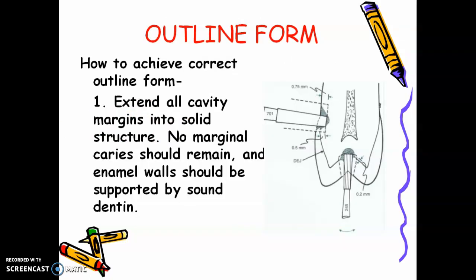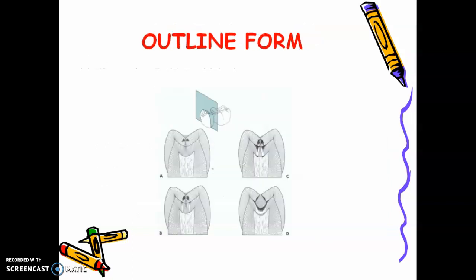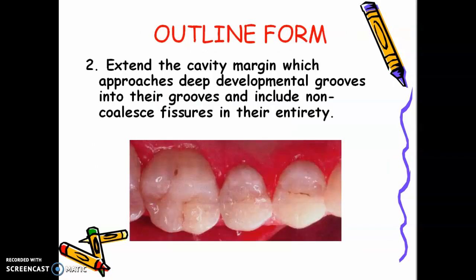So how do you achieve correct outline form? First, extend all cavity margins into solid structure — no marginal caries should remain. An enamel wall should be supported by sound dentine. It is acceptable to leave affected dentine in the preparation — the brownish or dark yellow area — but if you see caries on the enamel or DEJ, you have to remove it. When we do outline form, we follow the anatomy of the tooth.